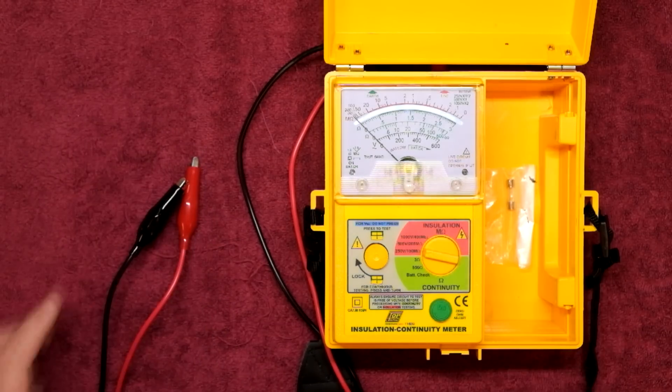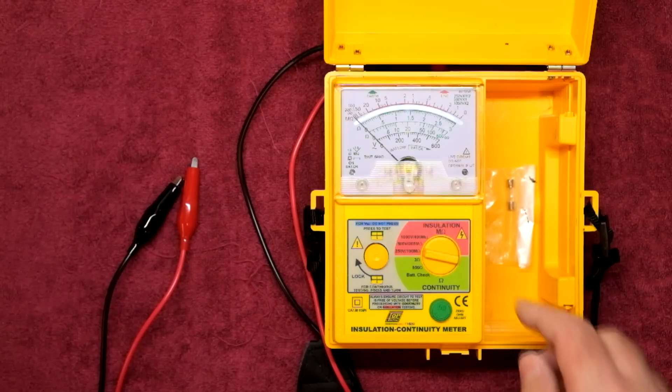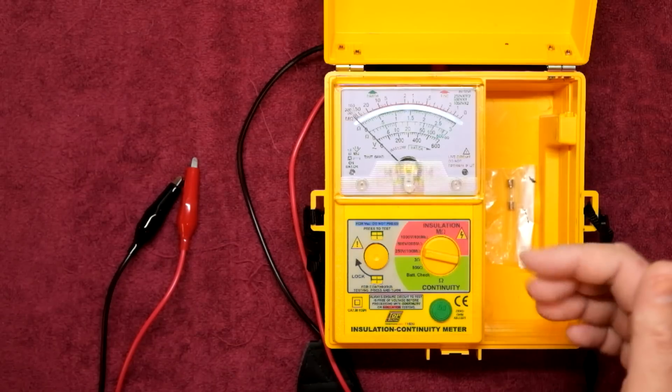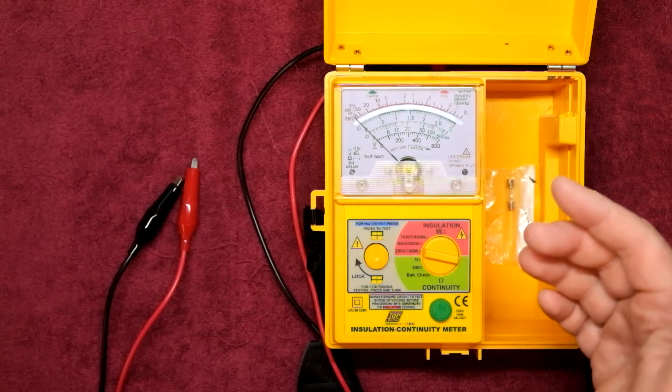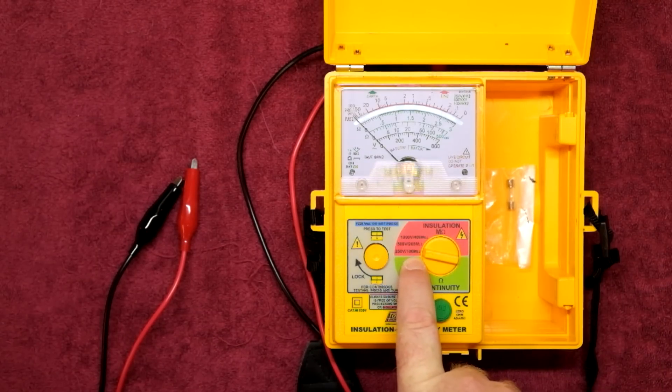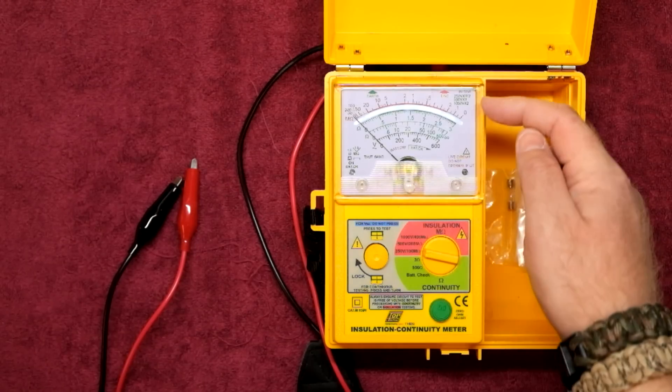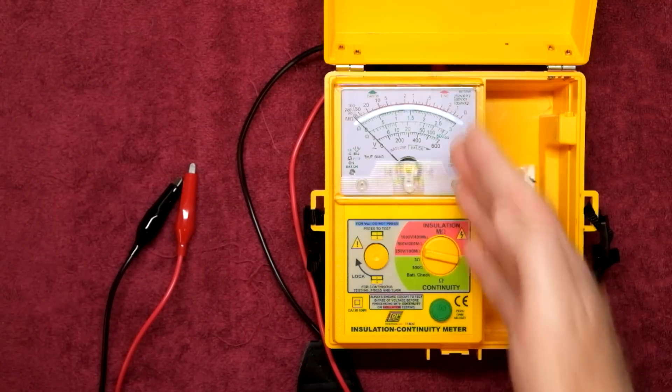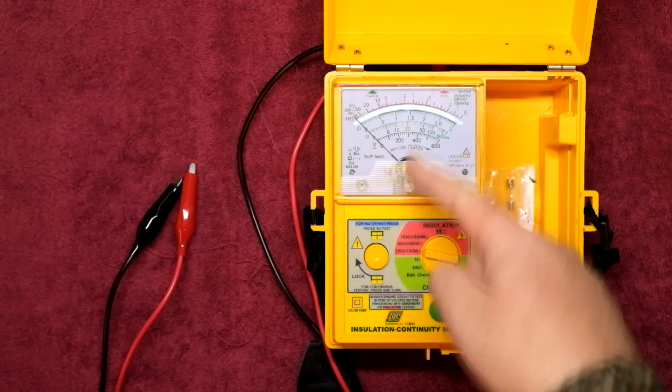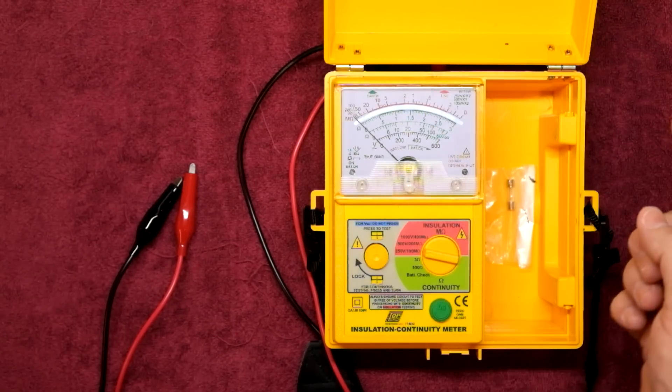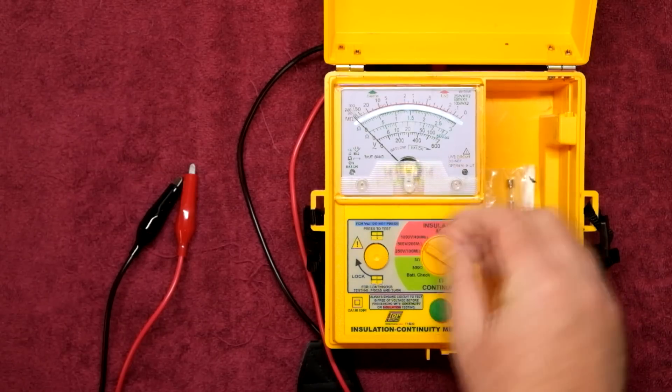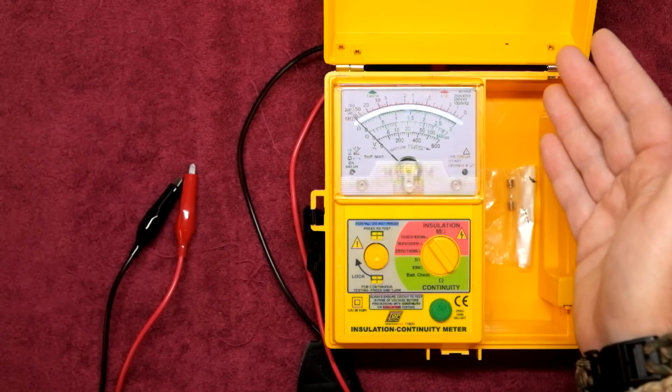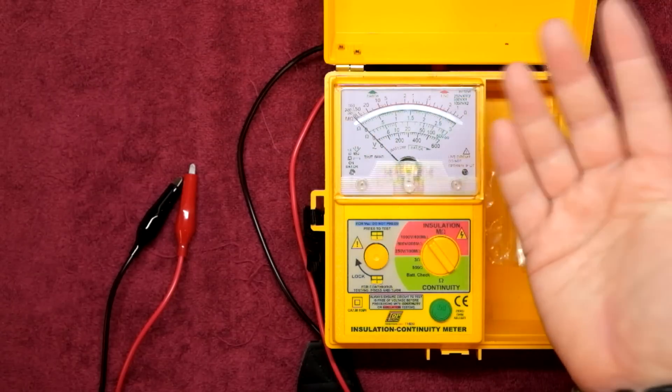But where this thing really comes into its own is the insulation resistance tests. This specific meter will do 250 volts, 500 volts or 1000 volts. The readings obviously change accordingly. For example if you're on the 250 volts you'll see it says 100 mega ohms. So basically at 250 volts you're halving whatever the displayed resistance is. So for example if you read 2 mega ohms when you push the test button you halve it so it's actually 1 mega ohms. If you set it on the 500 volt scale it's exactly as it is. So whatever it reads that's currently what it is and if you go to the 1000 volt scale you multiply it by 2. So if you read 1 it's now 2 and so on so forth.